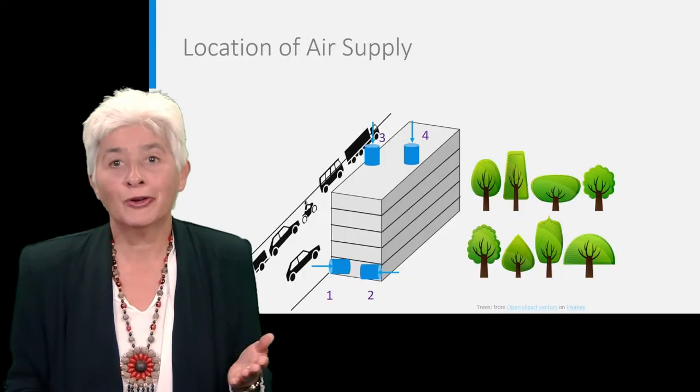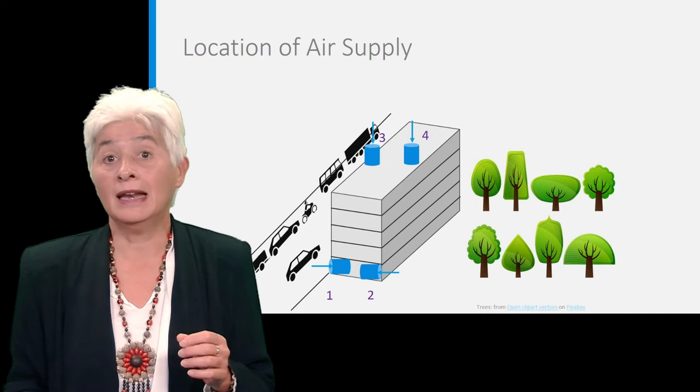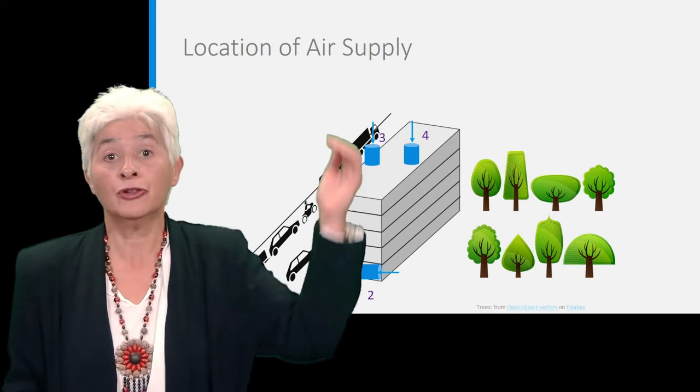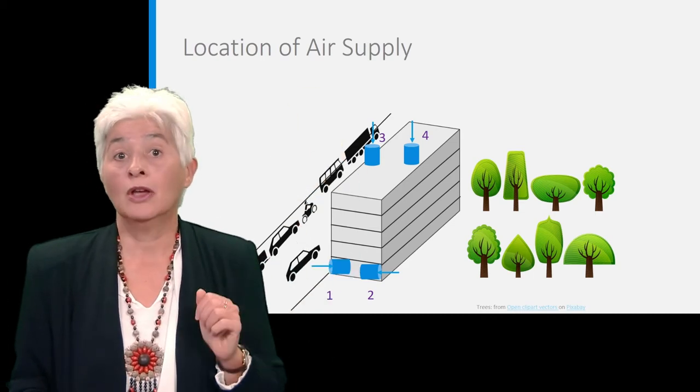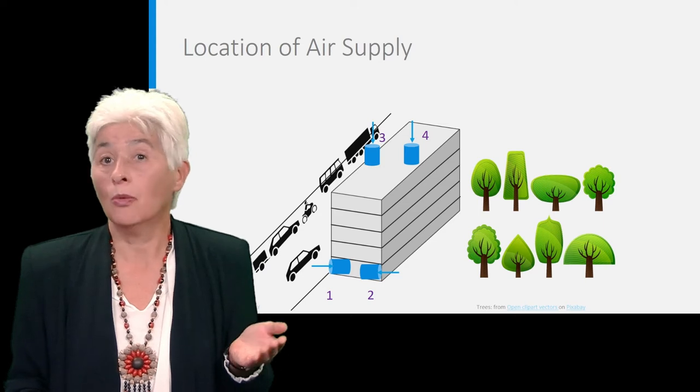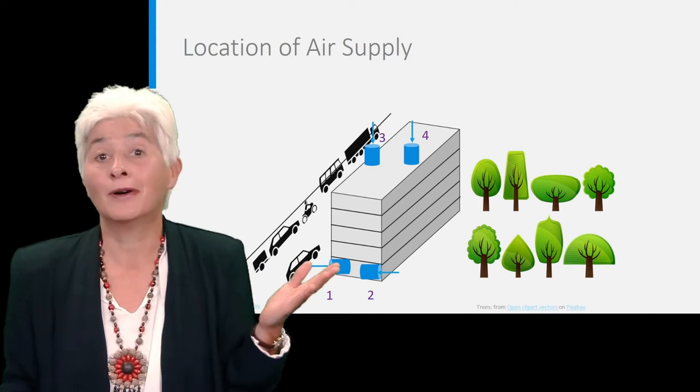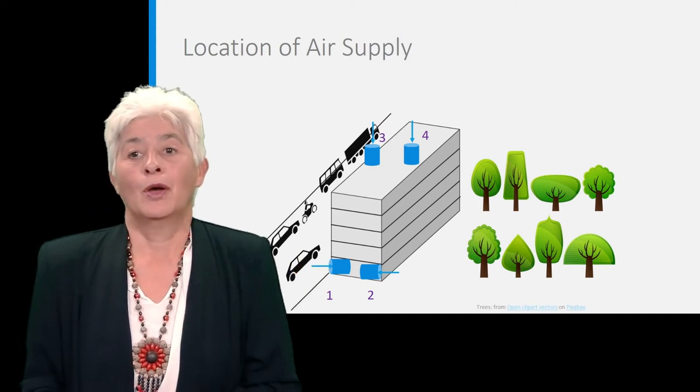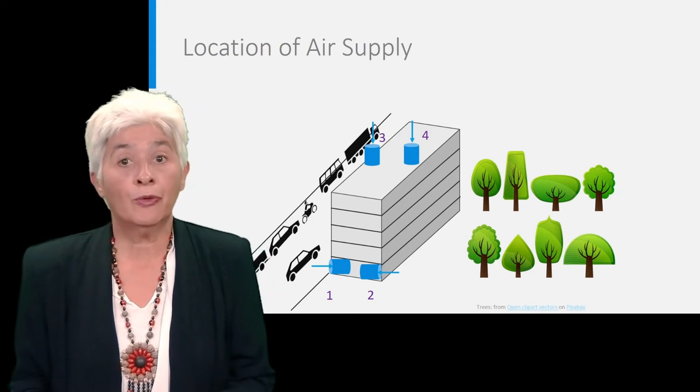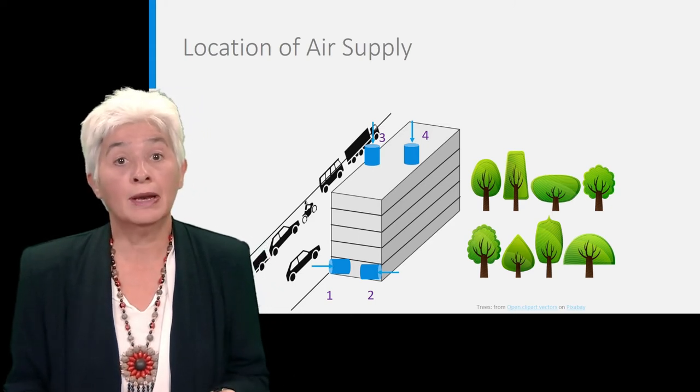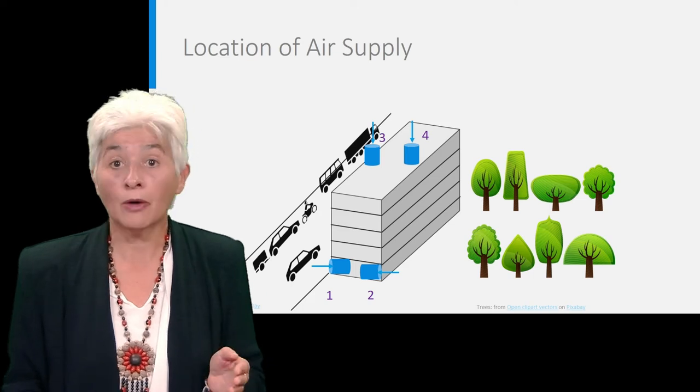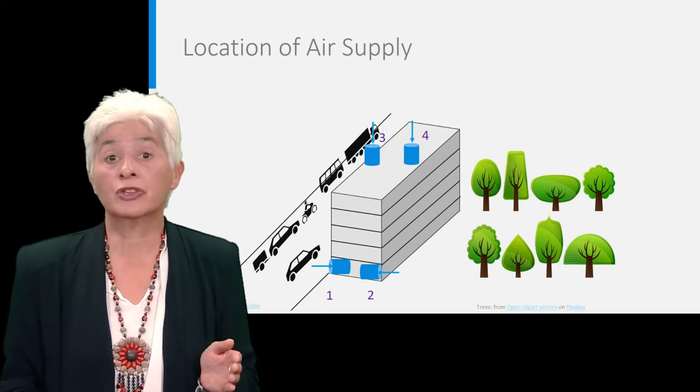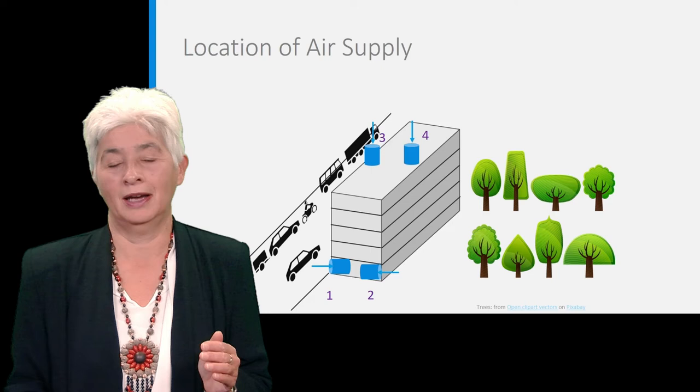Let's start first with the location of the air inlet where the outdoor air is supplied to the air handling unit. Where should we position it? One, two, three, or four? Well, position one is at street level, so a lot of pollution by traffic will enter the building, which is threatening for the quality of the indoor climate. So that's really not a good idea.